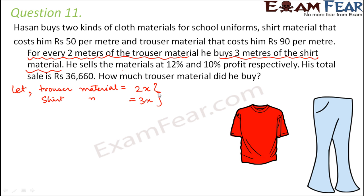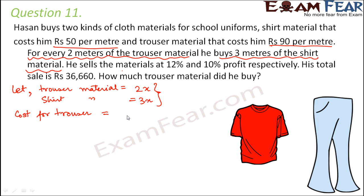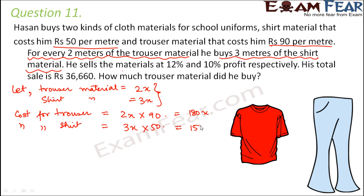With this assumption, let us calculate the cost price for Hasan. The shirt material cost him Rs 50 per meter and the trouser material cost Rs 90 per meter. So the cost for trouser material is 2x × 90 = 180x, and the cost for shirt material is 3x × 50 = 150x.